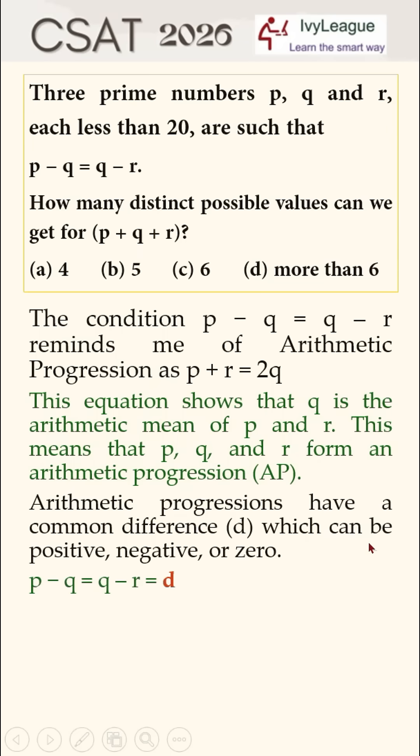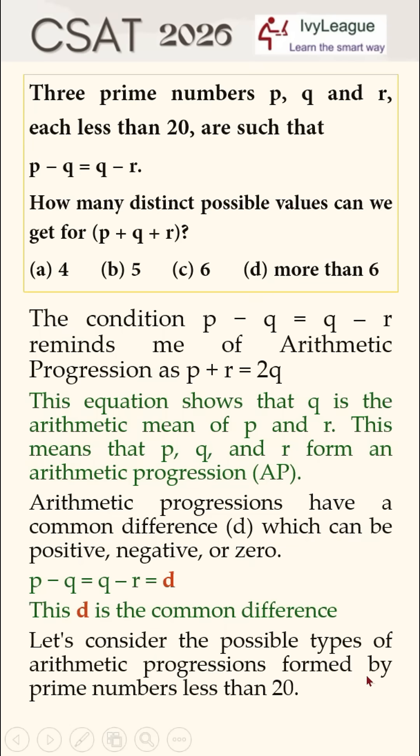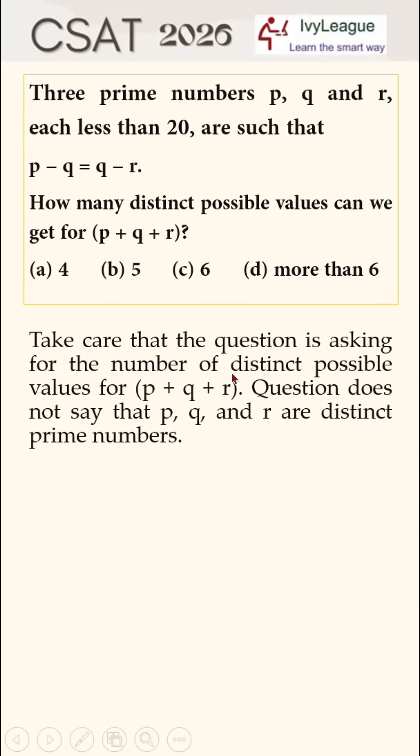This means that p, q, and r form an arithmetic progression (AP). P minus q is equal to q minus r, which is equal to d, the difference. Let's consider the possible types of arithmetic progressions formed by prime numbers less than 20. Take care that the question is asking for the number of distinct possible values of p plus q plus r.